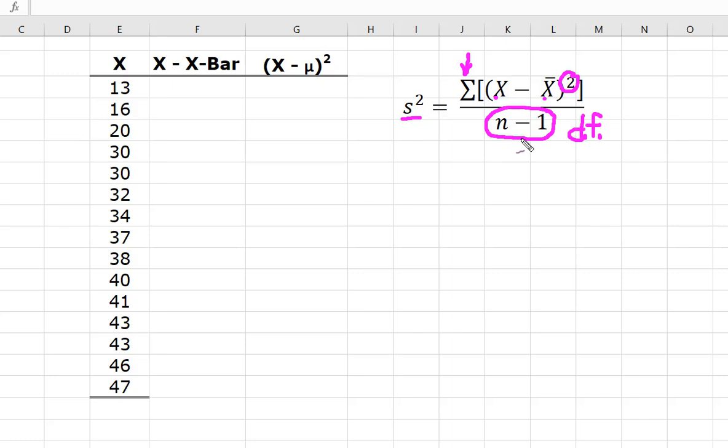We divide by n minus 1 to make the sample variance and standard deviation an unbiased estimator of the population parameter. Sounds very fancy, doesn't it? But I'm going to show you how to calculate this in a second.